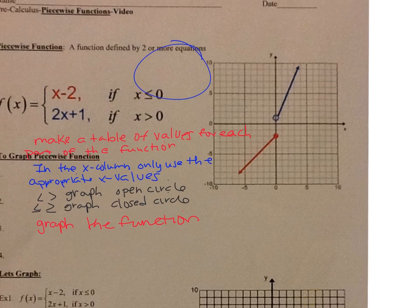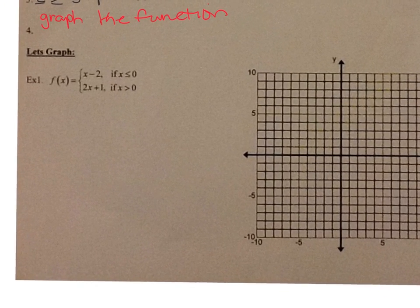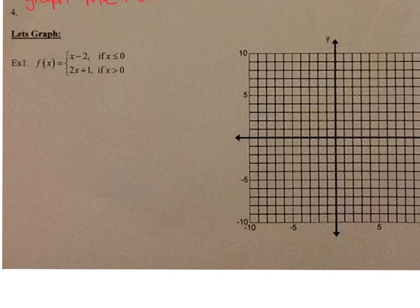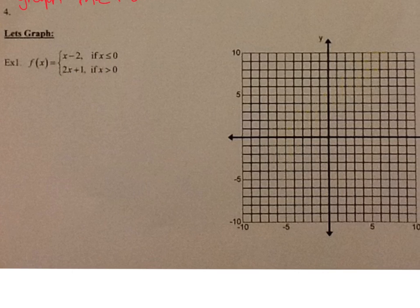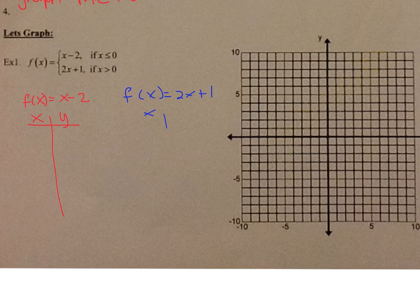I'll show you how to graph this one right here. So I have f(x) equals x minus 2 for x is less than or equal to 0, and f(x) equals 2x plus 1 when x is greater than 0. Let's start. Over here I'm going to do f(x) equals x minus 2, so I'm going to need an x column and a y column. And over here I'm going to do f(x) equals 2x plus 1. Make sure you have your calculators out. Let's start by plugging in y equals x minus 2.